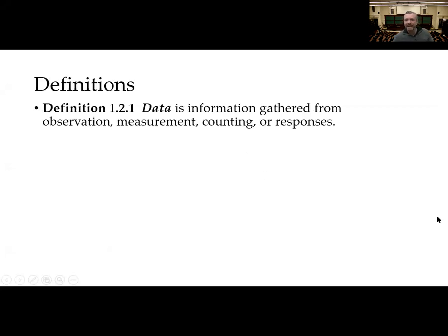So our first definition is data. That's a term you hear thrown around a lot, but what is data? In one word, data is information. That's it. It's information. Where does that information come from? Well, it may be gathered from observation, maybe a measurement, counting, or responses.